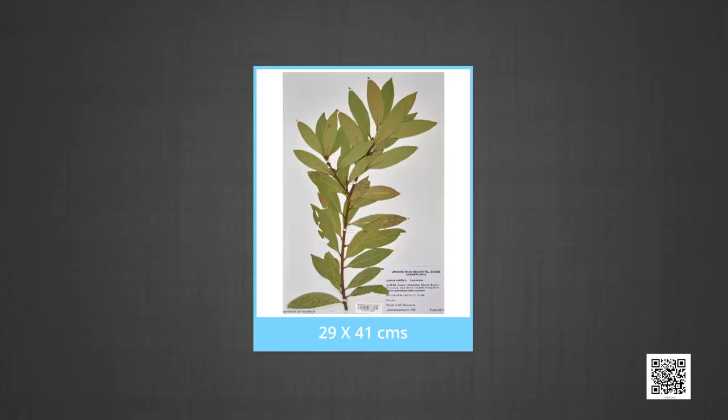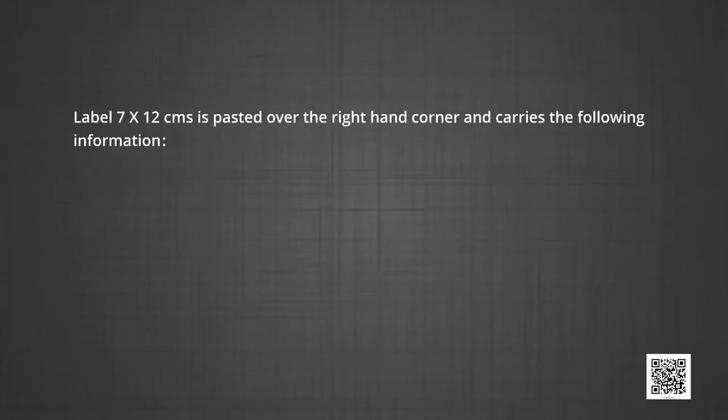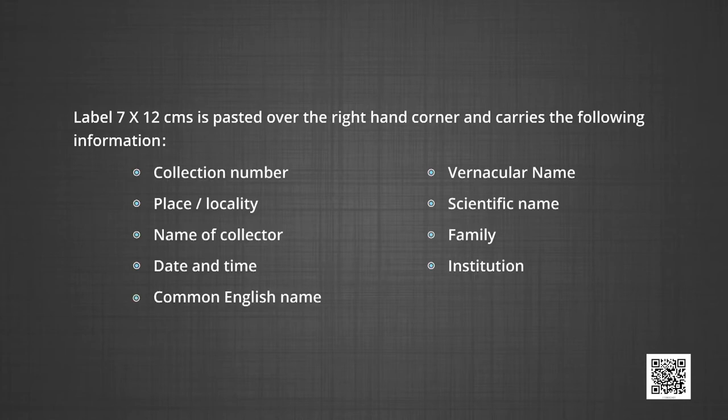The dried specimens are then pasted on herbarium sheets. A standard size of a herbarium sheet is 29 by 41 cm. Specimens before fixing are kept upside down on a paper sheet; glue or adhesive is applied and then they are mounted on a herbarium sheet. All pasted specimens are sprayed with fungicides like 0.1% mercuric chloride, pesticides like DDT, naphthalene and carbon disulfide to check the growth of fungi. Heavy parts of plants like seeds and fruits are put in packets and attached with the sheet. A label of 7 by 12 cm is pasted in the right-hand corner carrying: collection number, place or locality, name of the collector, date and time of collection, common English name, vernacular name, scientific name, family and institution.